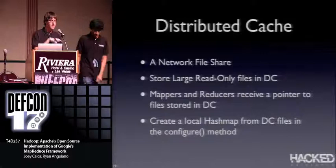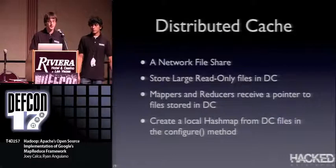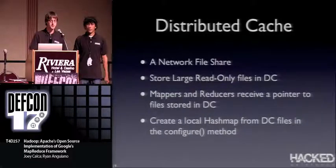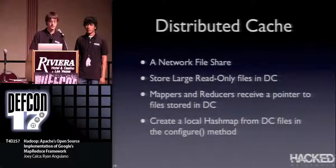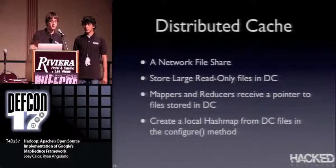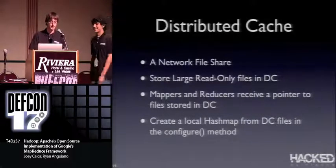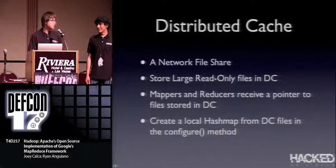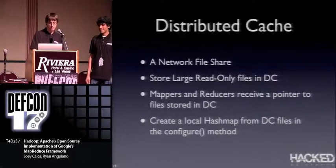Beyond the basic input-to-output flow, there's a facility called distributed cache where your mapper and reducer can compute against a second data set. Distributed cache is essentially a network file share storing large read-only files. Your mappers and reducers receive a pointer to where the files are stored. Critically, you have to copy the file out of distributed cache into RAM on each node, creating a hash map in your configure method. One job where I didn't do that ran for five and a half hours and then crashed the whole cloud — bad idea.